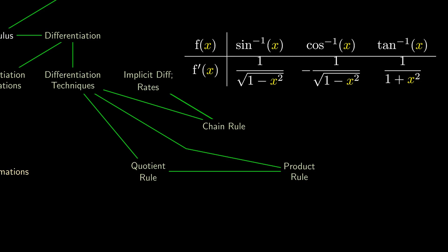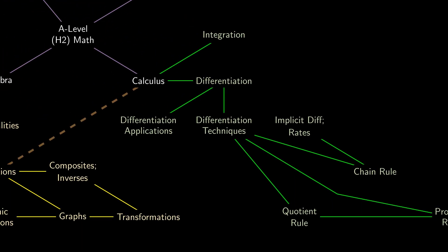The chain rule also helps us talk about related rates of change, where the derivative of y with respect to t can be broken down into its constituent derivatives. And we can use these ideas to solve optimization problems such as maximizing the profit of a company, a key result in microeconomic analysis.